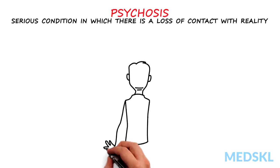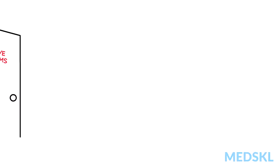Psychosis is a serious condition in which there is a loss of contact with reality. It can be characterized by the presence of any of five key features.